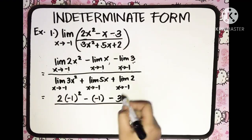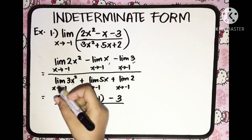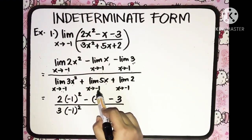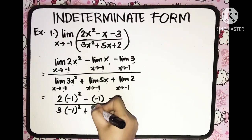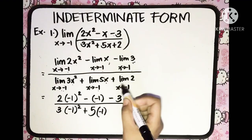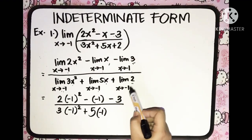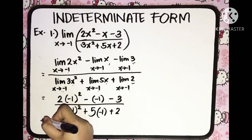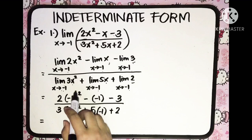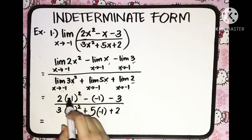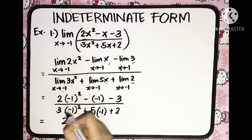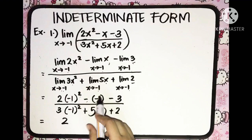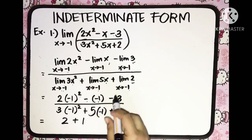All over, we have the limit of 3x squared as x approaches negative 1, so we have 3 multiplied by negative 1 squared, plus the limit of 5x as x approaches negative 1, so 5 multiplied to negative 1, plus the limit of 2 as x approaches negative 1, which is the constant 2. Simplifying: negative 1 squared is positive 1, so 1 times 2 is 2. Then minus negative 1, so negative times negative gives positive 1.